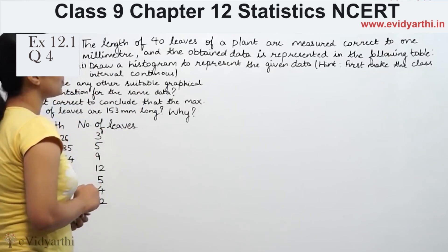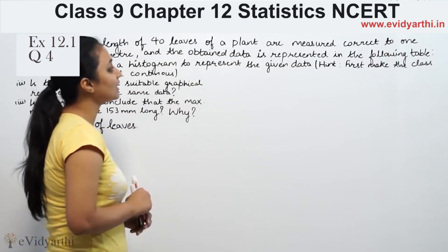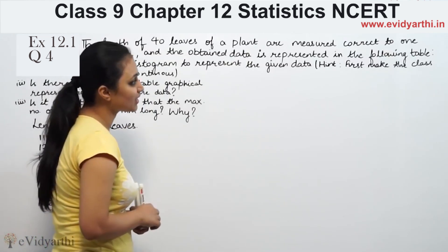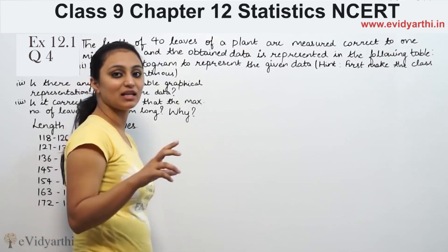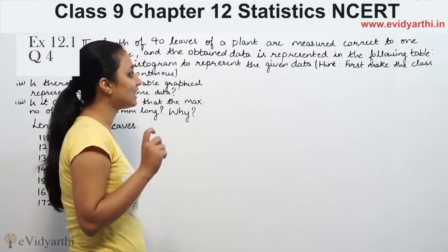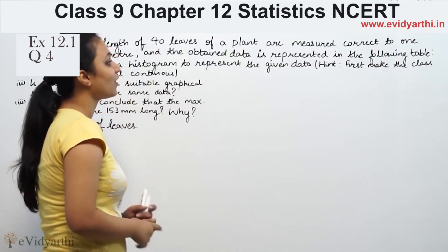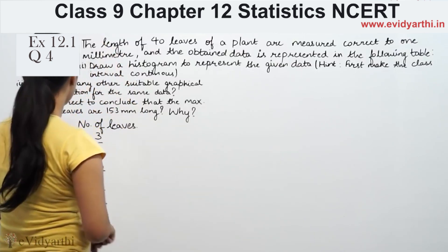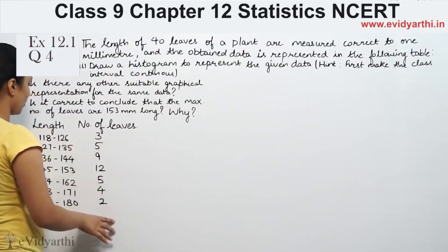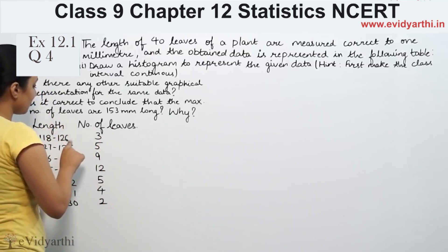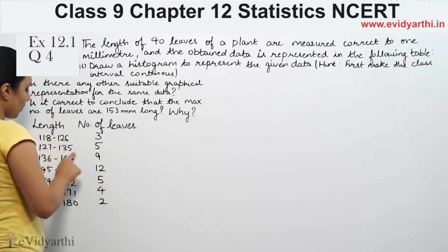The lengths of 40 leaves of a plant are measured correct to 1 mm and the same data is represented in the following table. We need to make the class intervals continuous. This data is not continuous, so the upper limit of one class will not match the lower limit of the next.